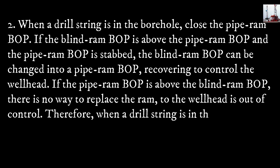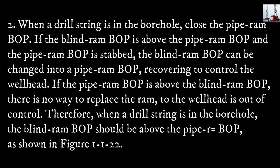Mode 2 — when a drill string is in the borehole, close the pipe ram blowout preventer. If the blind ram BOP is above the pipe ram BOP and the pipe ram BOP is stabbed, the blind ram BOP can be changed into a pipe ram BOP, recovering control of the wellhead. If the pipe ram BOP is above the blind ram BOP, there is no way to replace the ram and the wellhead is out of control. Therefore, when a drill string is in the borehole, the blind ram BOP should be above the pipe ram BOP, as shown in Figure 1122.